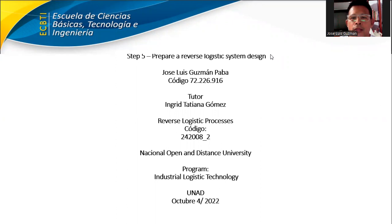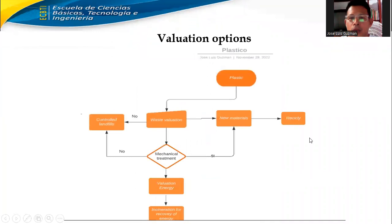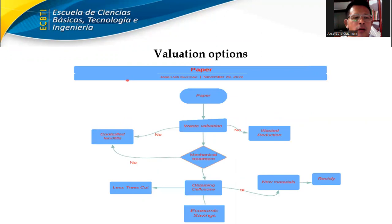This is an activity for Step 5: Preparing a Reverse Logistics System. This activity consists of identifying the recording options, a proposal of a flow card, and a plan for a post.